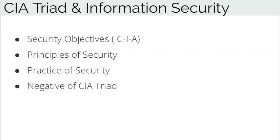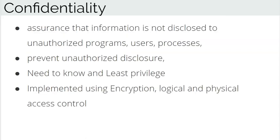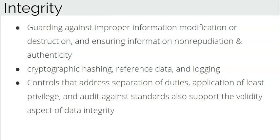Security objectives provide the principles of security, and those principles give us practices. To implement these principles and practices we use technology — so adding a firewall is only the technological part of overall information security. Confidentiality, which prevents unauthorized disclosure of data, is the basis of the security principles of need-to-know and least privilege. It can be implemented using encryption or by controlling logical and physical access.